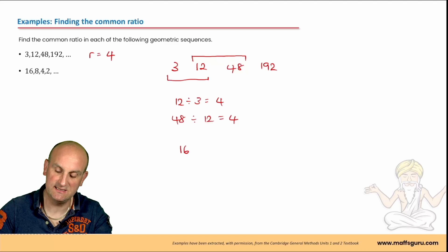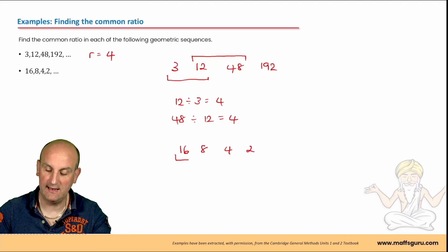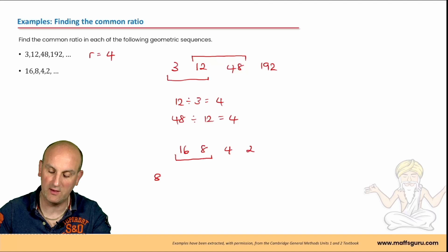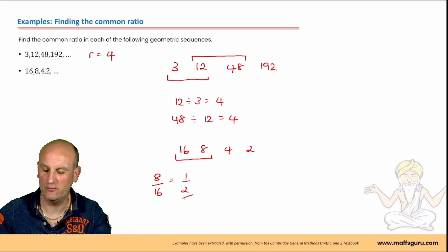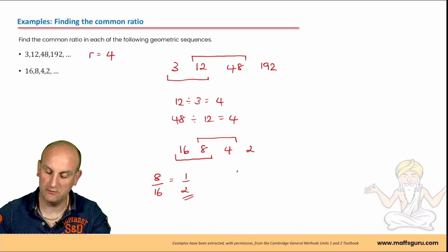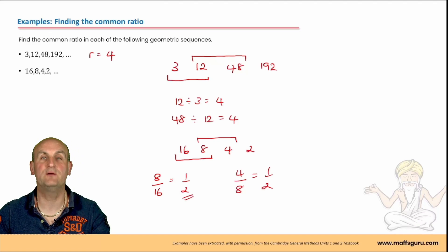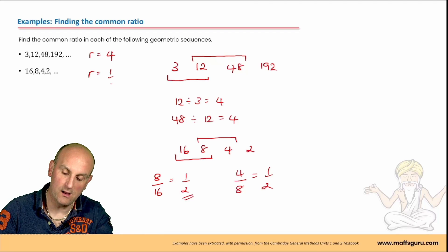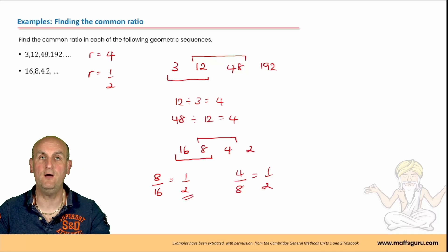Next sequence: 16, 8, 4, 2. It's not simply divided by two — we take two consecutive terms and divide them. 8 divided by 16 gives a half. I test the next pair: 4 divided by 8 is also a half. So this is a geometric sequence with R equal to a half — I'm multiplying by a half, or equivalently dividing by two, each time.